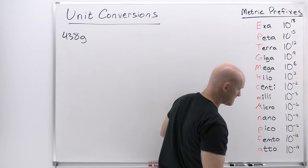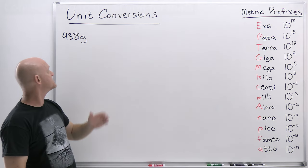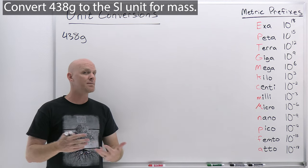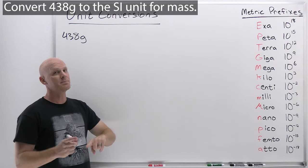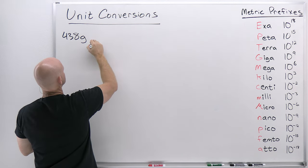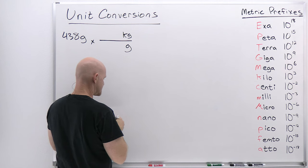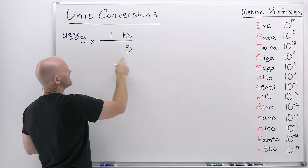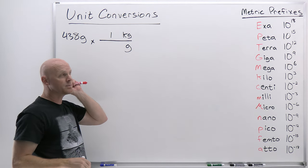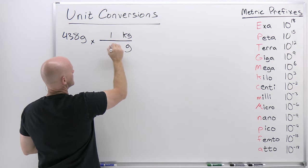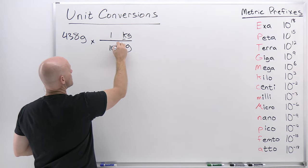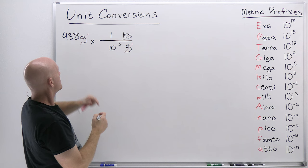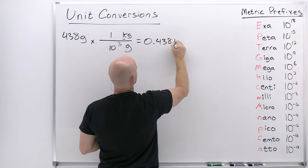Converting 438 grams to the SI unit: the SI unit for mass is the kilogram, not the gram. To go from grams to kilograms, put grams on the bottom so the units cancel and kilograms on top. The unit with the prefix — kilo — gets the number one, and the prefixless unit gets the power of 10. Kilo means 10 to the third, or 1,000, and one kilogram equals 1,000 grams. Taking 438 divided by 1,000 gives 0.438 kilograms.